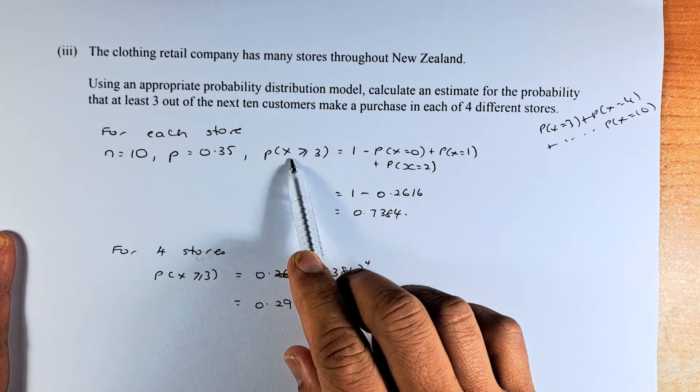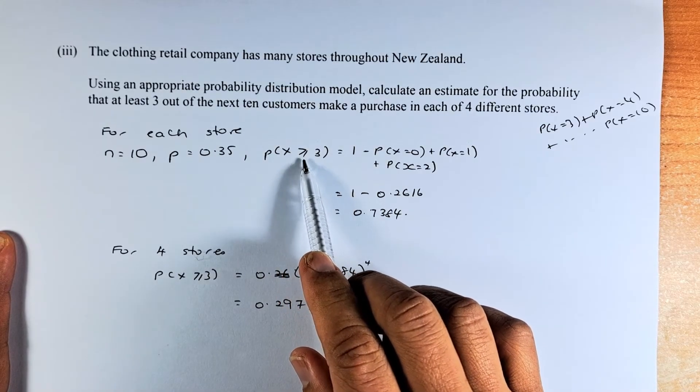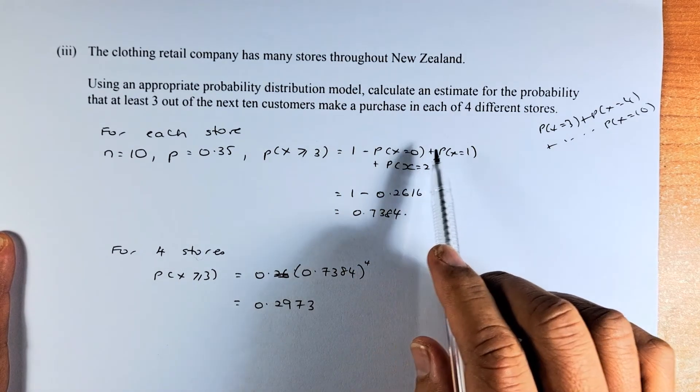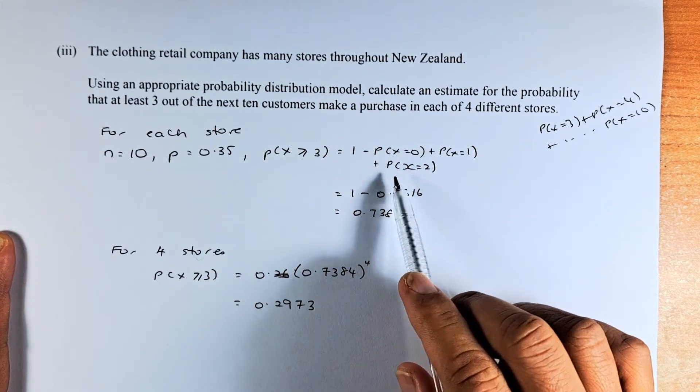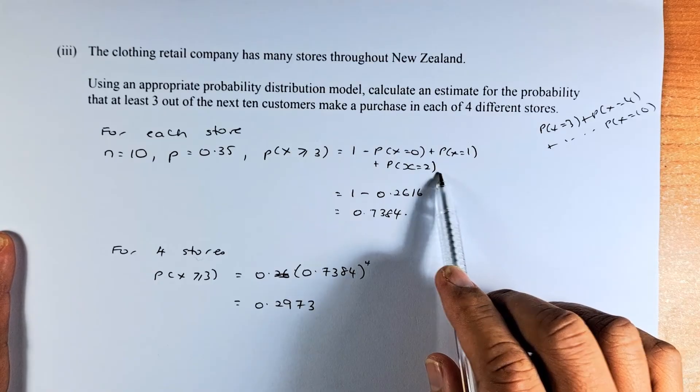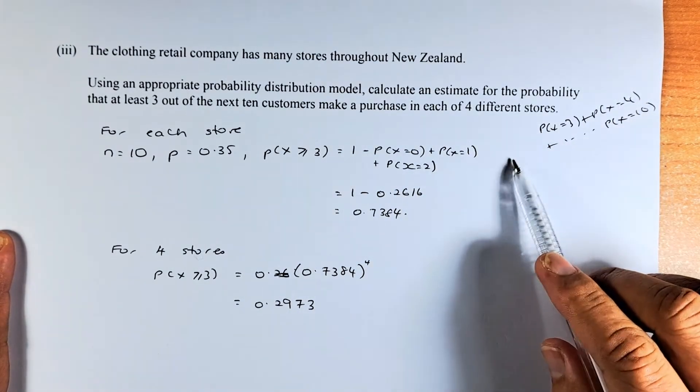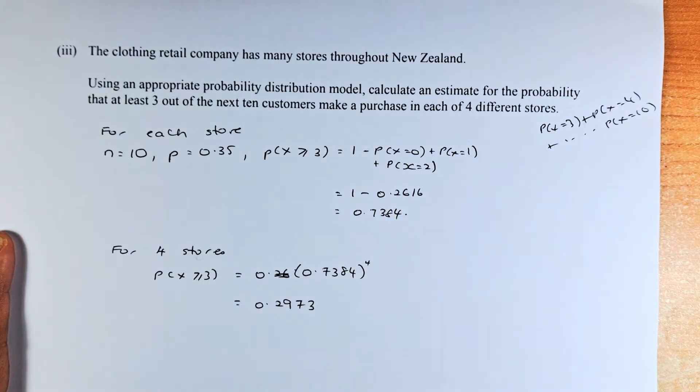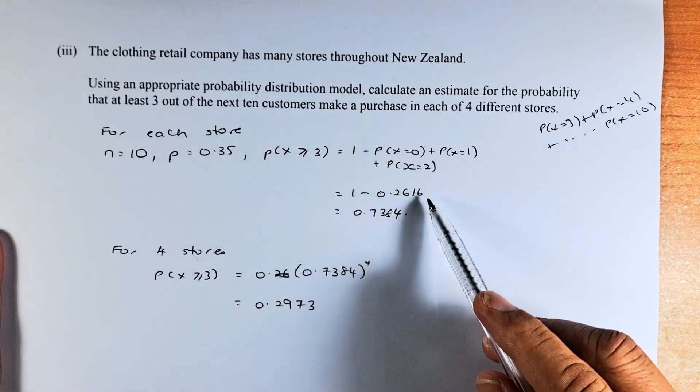This time we can calculate probability of X greater or equal to 3. So it's going to be 1 minus probability of 0 plus probability of 1 and probability of 2. Because you are looking for 3, 4, 5, 6, 7, 8, 9, 10. So 1 minus (0, 1, 2) will give you the probability of X greater or equal to 3.